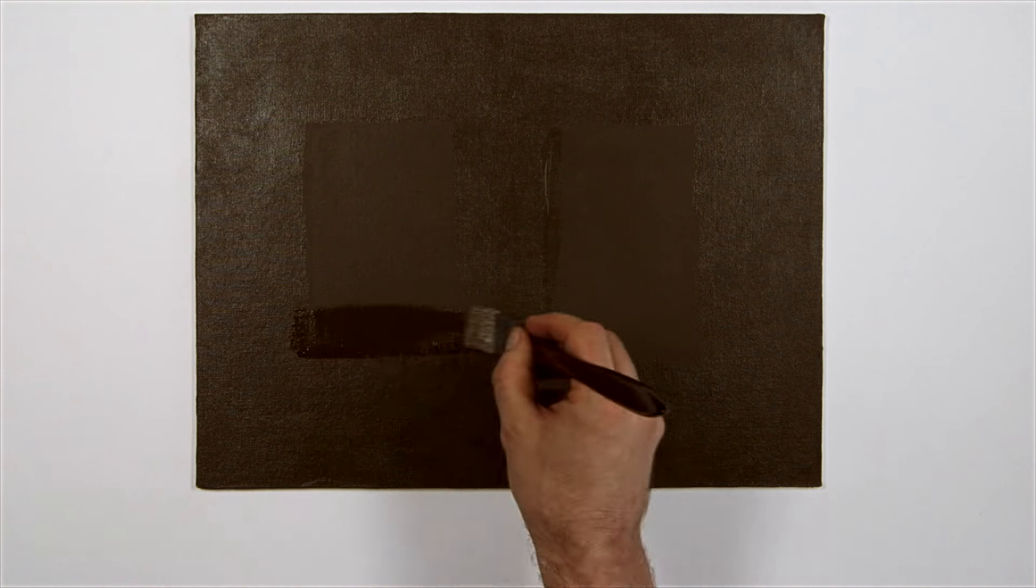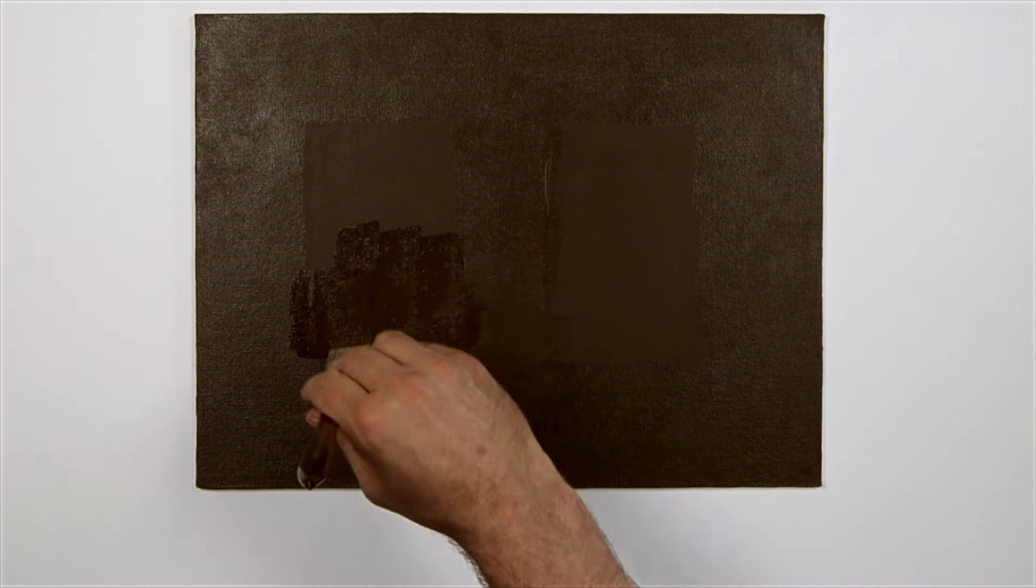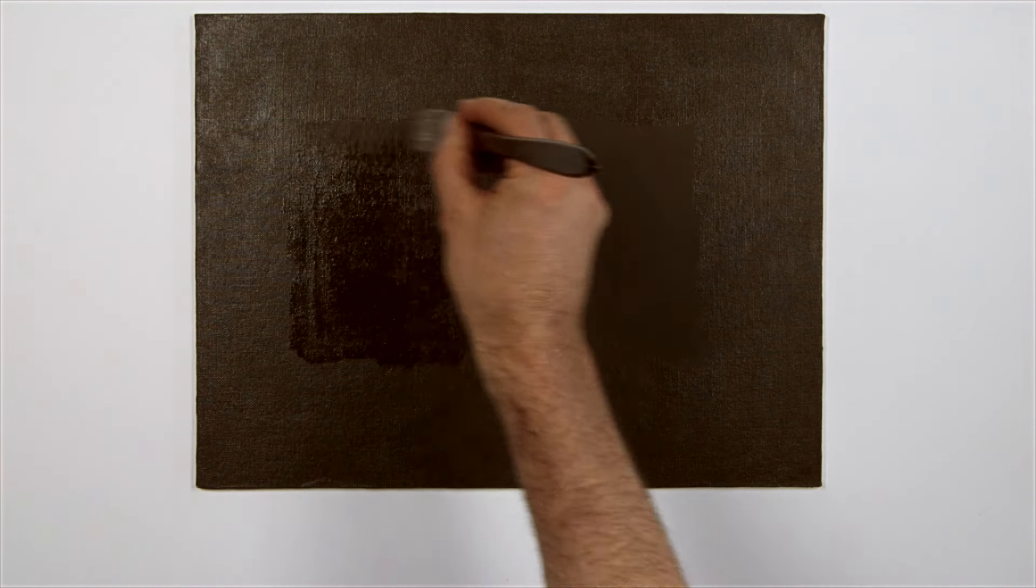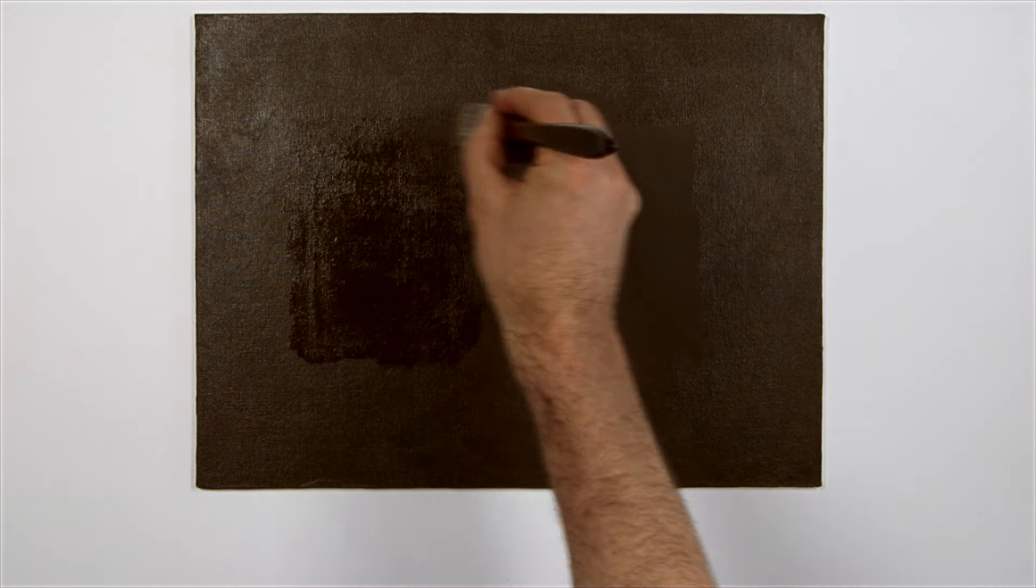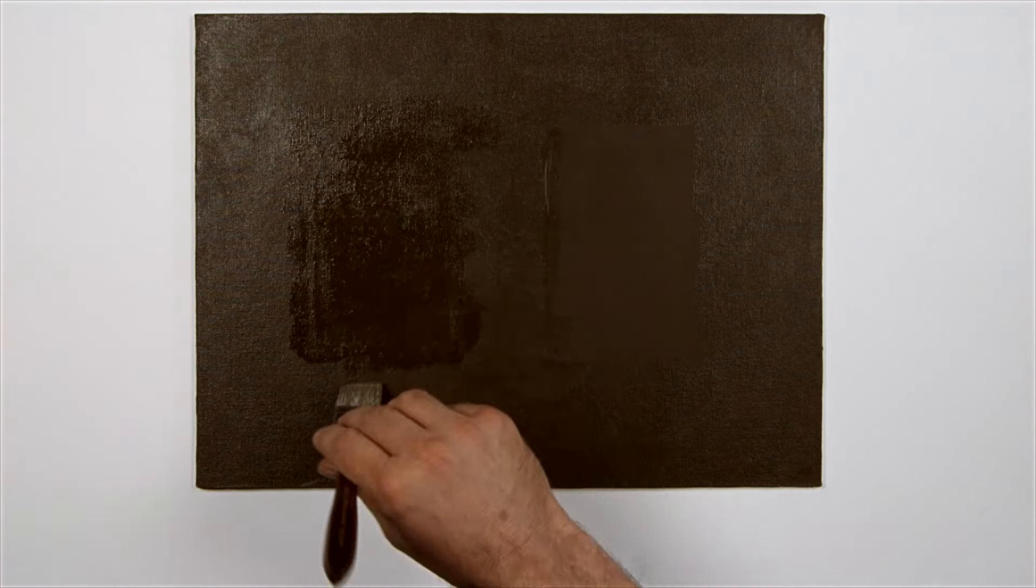Oiling out is a simple way of rectifying this problem. I'm applying the mixture to the painting and you can see the improvement in saturation immediately. If the painting is dull in patches, the mix will be absorbed where it's needed and will sit on the surface where it's not.